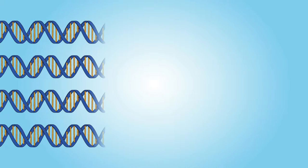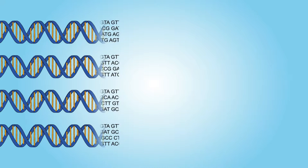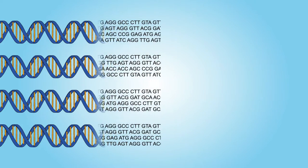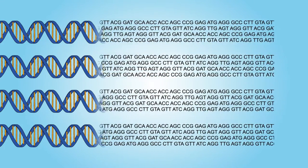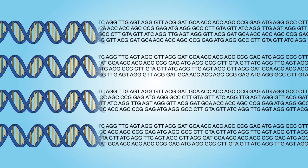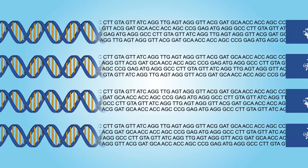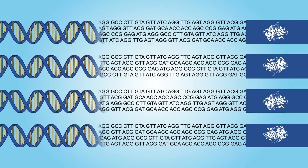Genes can now be sequenced so quickly and cheaply that sifting through the data has become the biggest challenge. However, a group of American researchers has developed a way to make sense of it all. They've created a scoring system that can determine which genes actually cause a particular disease.